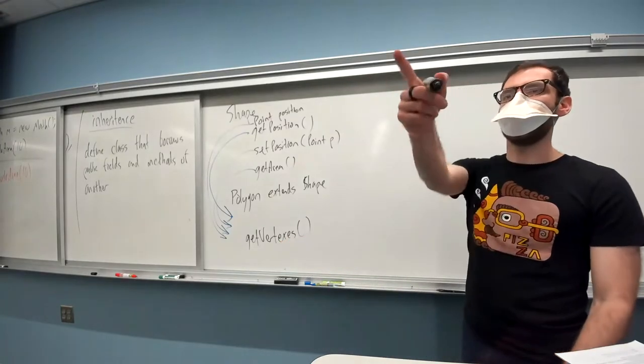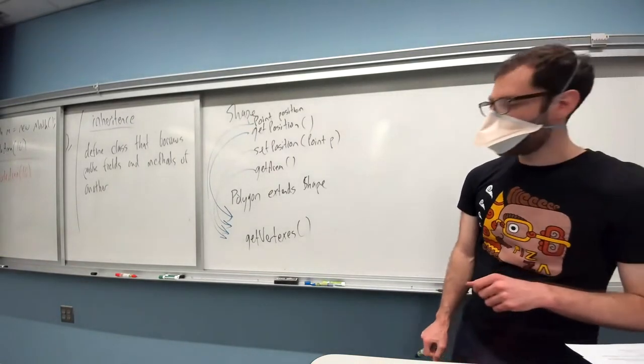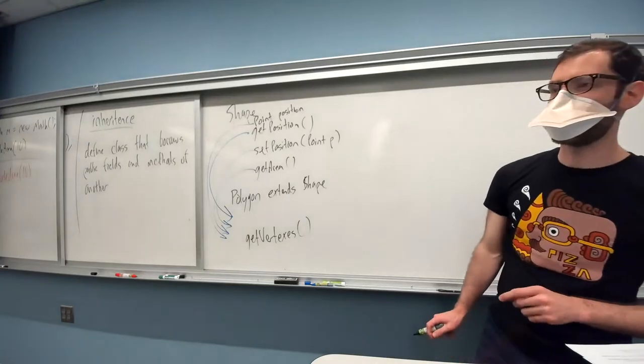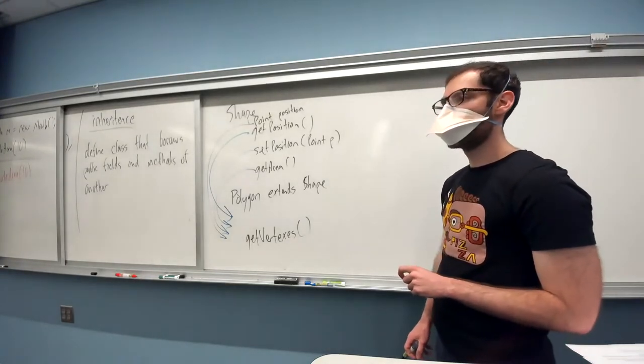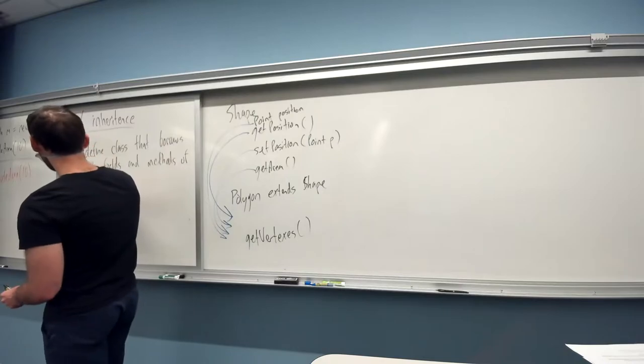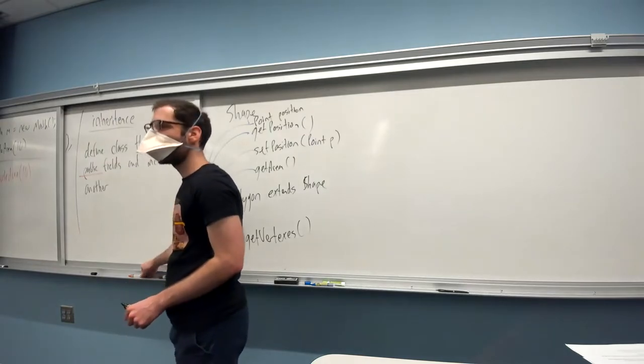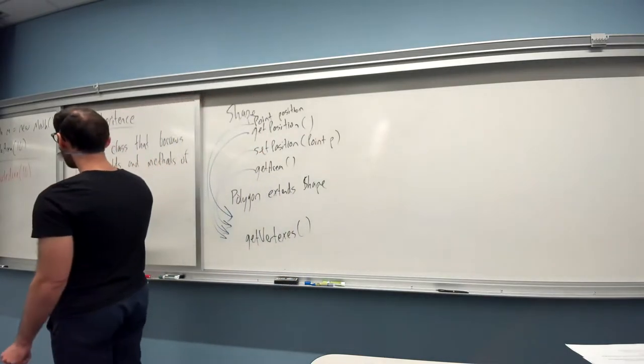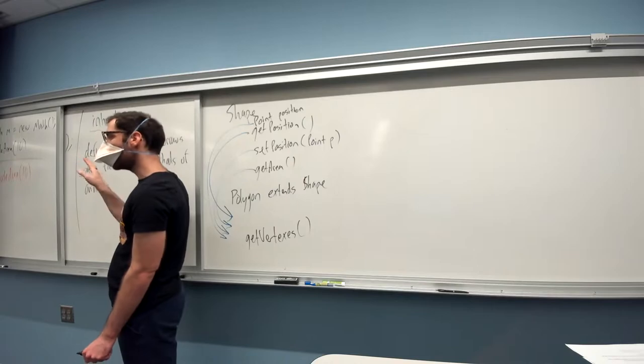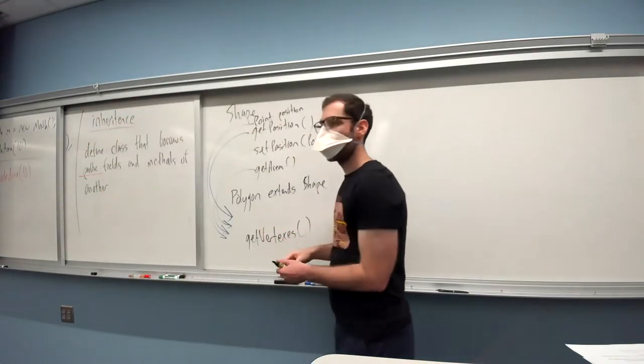And we might say there is then a polygon class that extends shape, which is how we say one class inherits from another. And when we say polygon extends shape, that means it's going to inherit, it's going to get the get position method, the set position method, and the get area method. It's going to get exactly those that were defined in the shape class. And if I also define shape to have a field, a point that I call position, polygon gets that as well. And so if I want my polygon class to just be able to do all the things that a shape can do, putting extends shape saved me the work of redoing all of these things that I already did in the shape class.